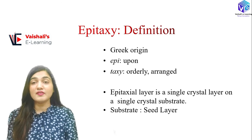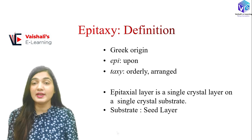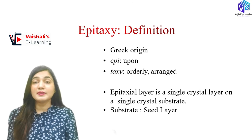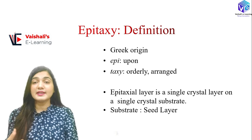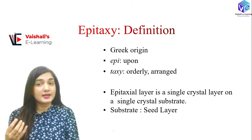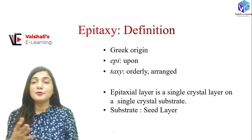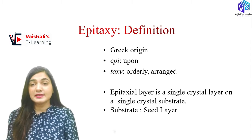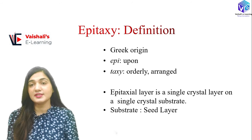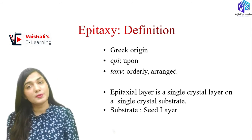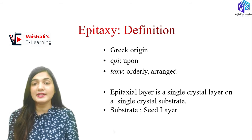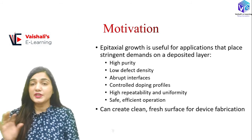This is the silicon wafer, and now we will make an orderly arranged layer on it. This layer can be made with different qualities. If the substrate has N-type dopants, we can take P-type for the layer — we can vary the dopant. This layer is called the epitaxial layer: a single crystal layer on a single crystal substrate. The substrate acts as a seed in this process, and the layer grows from it.